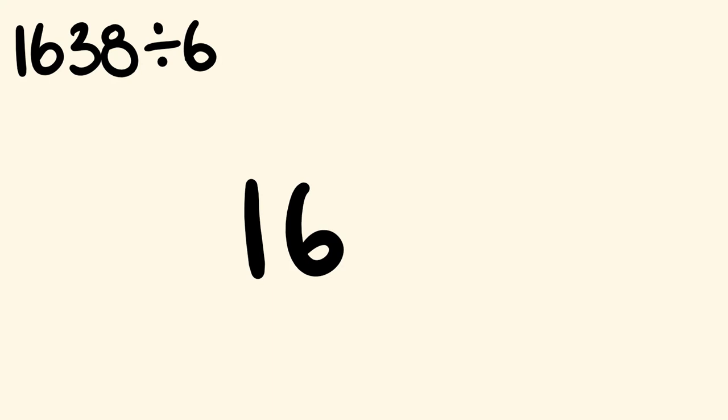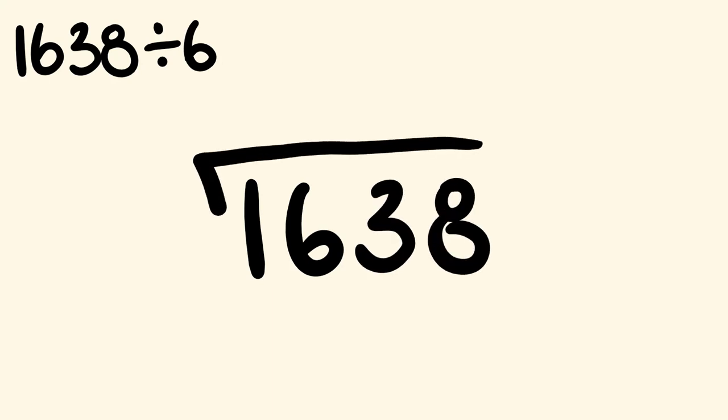So let's have a look at an example. We start with 1,638 and we're going to divide this by 6. The way we do this is we set this up as follows. We have 1,638 and around that we put this here where we're dividing by 6. And we're going to get our answer up the top here as we work our way from left to right.